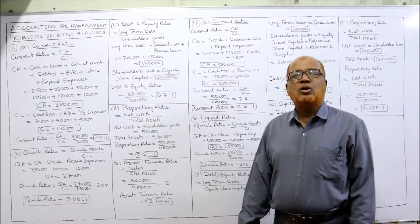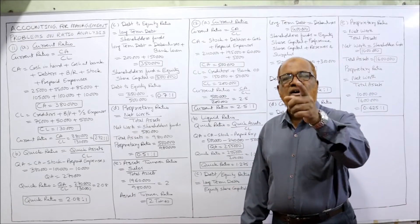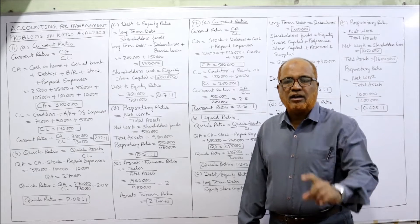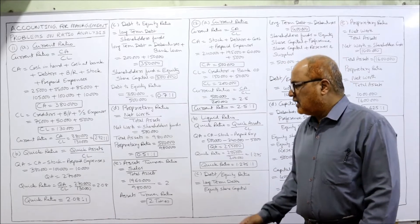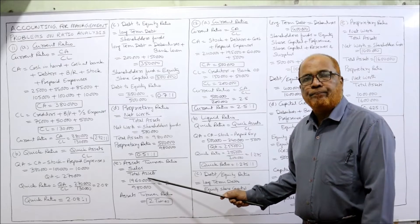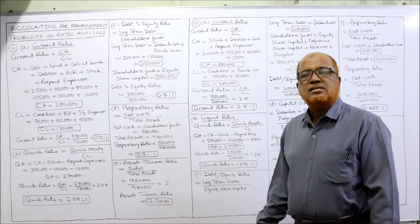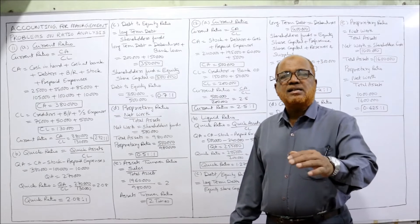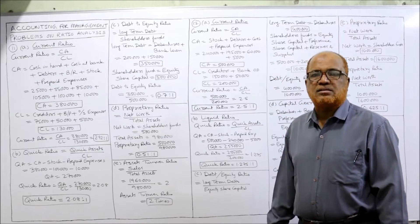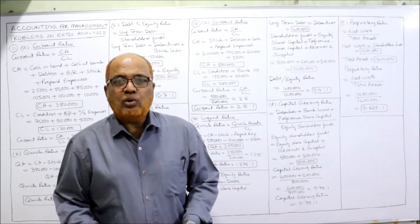Last ratio for problem 11 is assets turnover ratio. The formula is sales divided by total assets. Sales are given in the problem as 19 lakh 60,000, and total assets are 9 lakh 80,000. You get 2 — so assets turnover ratio is 2, meaning the sales are double the total assets. This is the end of the 11th problem.